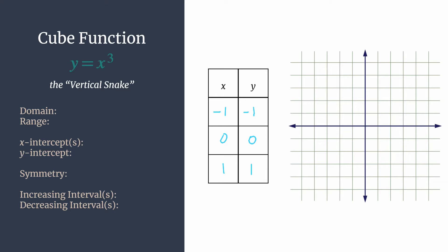So let's plot these three points. Negative 1, negative 1, 0, 0, and 1, 1.